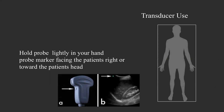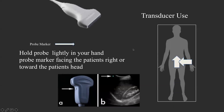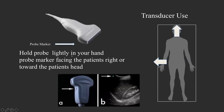The transducer should be held lightly in your hand with the probe marker directed toward the patient's right or toward the patient's head. For a longitudinal image, the probe direction should be toward the head; for a transverse image, it should be toward the patient's right. As shown here, the probe marker on the transducer corresponds to the marker seen on the screen.